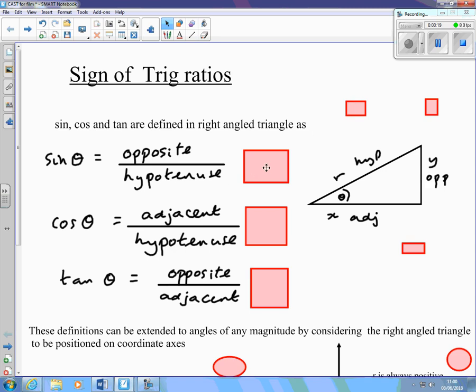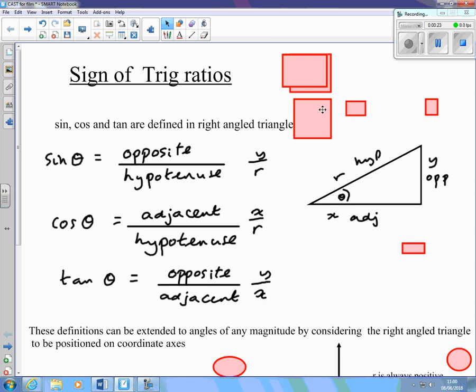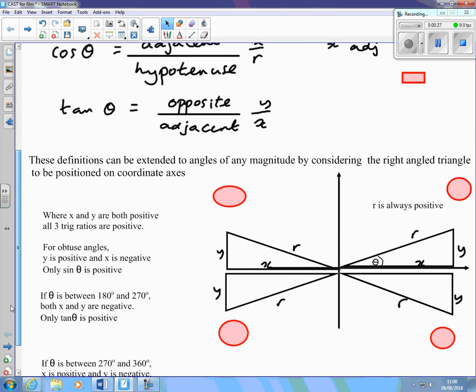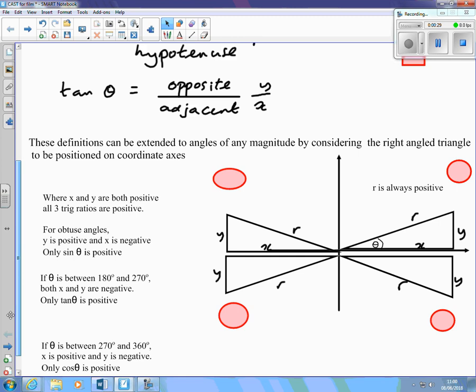I can write the trig ratios in terms of x and y and r, the hypotenuse. And this can be extended to angles of any magnitude by considering the right-angle triangle to be positioned on coordinate axes.